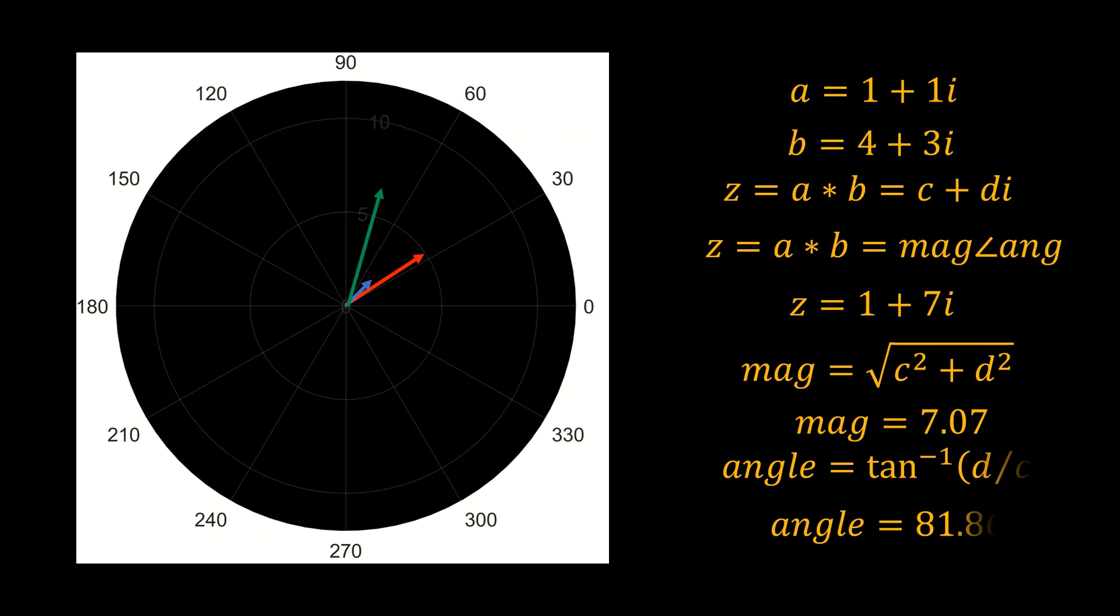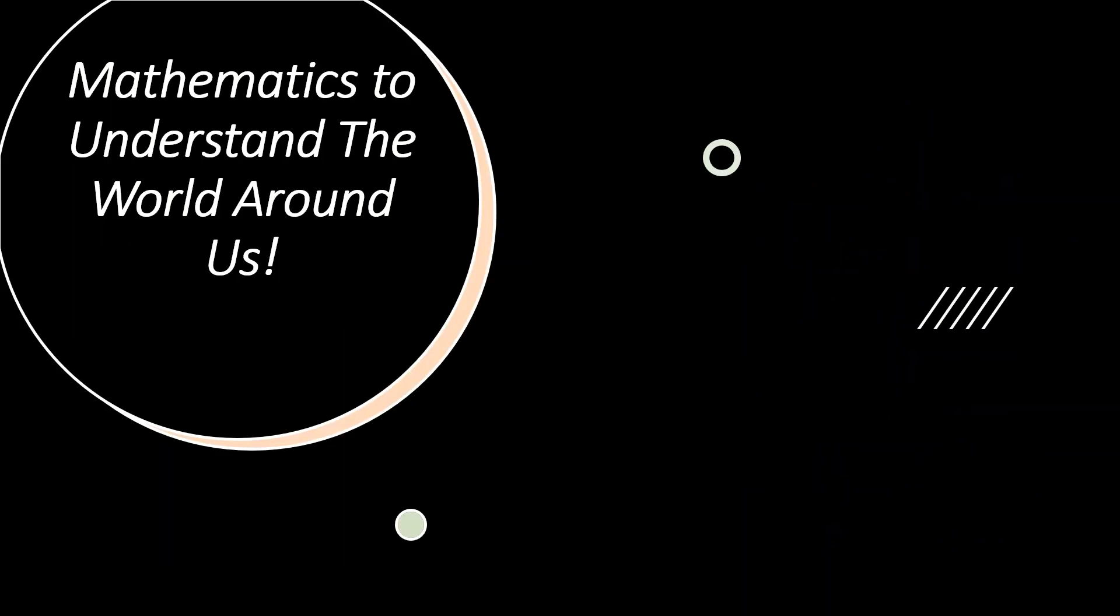Now the magnitude is 7, so initially the vector a is scaled up by this magnitude, then it will be rotated across its axis up to 81.86 degrees.